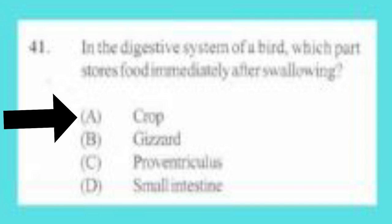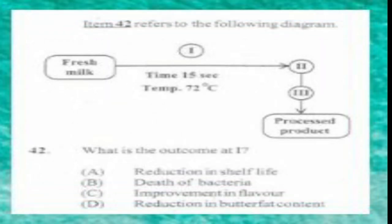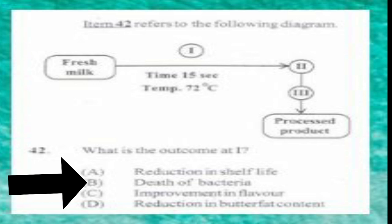Question number 42. Item 42 refers to the following diagram. What is the outcome at stage I? A. Reduction in shelf life, B. Death of bacteria, C. Improvement in flavor, D. Reduction in butterfat content. The answer is B, death of bacteria. Please note the temperature shown — it indicates that pasteurization is the process, and during that process bacteria are killed.